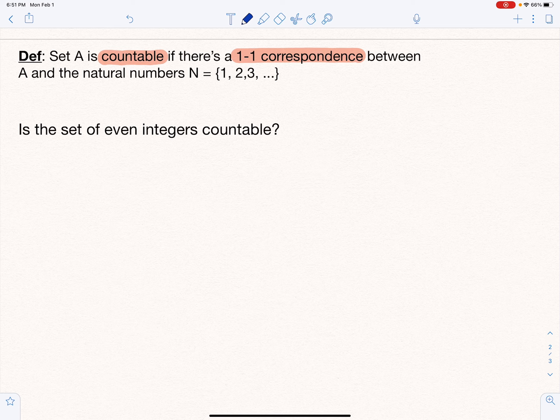Anyway, so is the set of even integers countable? What do the even integers look like? We have no lowest number. We have things like negative four, negative two, zero, two, four, and so on. So is it countable?